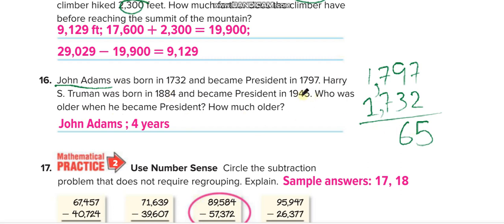What about the other one? Write this one up: 1945, and here 1884. Five minus four, one. Four minus eight, not possible. We take one from here, it will be eight, and this will be fourteen, and six. And eight minus eight, zero, and one minus one. So his age was 61, Truman. So John Adams was older, and how much older? Four years.